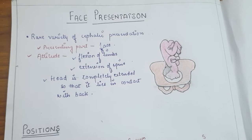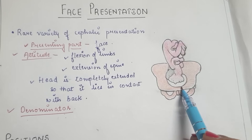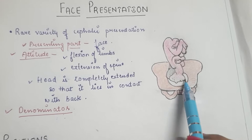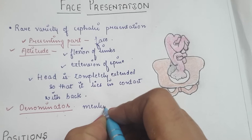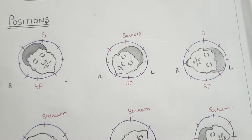The denominator in face presentation is the part which touches the pelvic floor first. In face presentation, the part which touches the pelvic floor first is the mentum, or chin. There are six positions in face presentation.